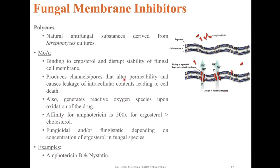The next class are the polyenes — fungal membrane inhibitors. These are usually natural antifungal substances derived from Streptomyces cultures. They work by binding to ergosterol and disrupting the stability of the fungal cell membrane, producing channels or pores that alter permeability and cause leakage of intracellular contents, ultimately leading to cell death. This also generates reactive oxygen species upon oxidation of the drug. Amphotericin's affinity for ergosterol is 500 times greater than for cholesterol. Examples include amphotericin B and nystatin.